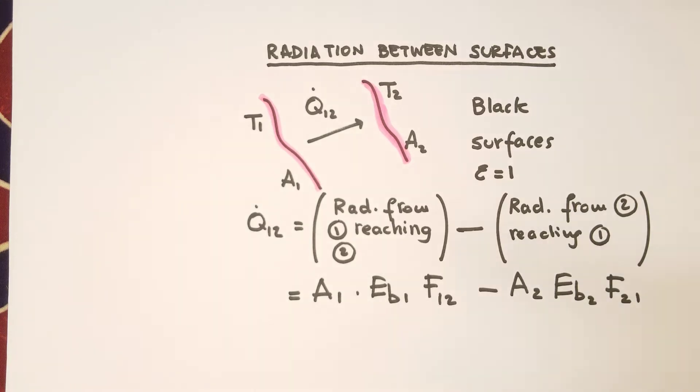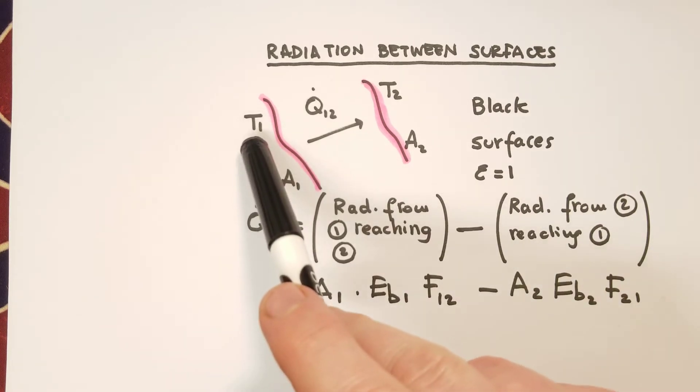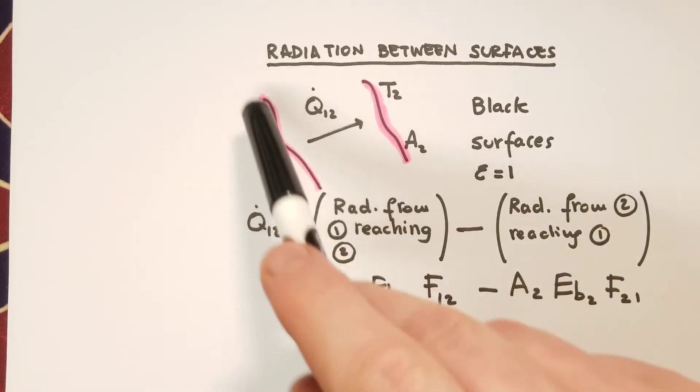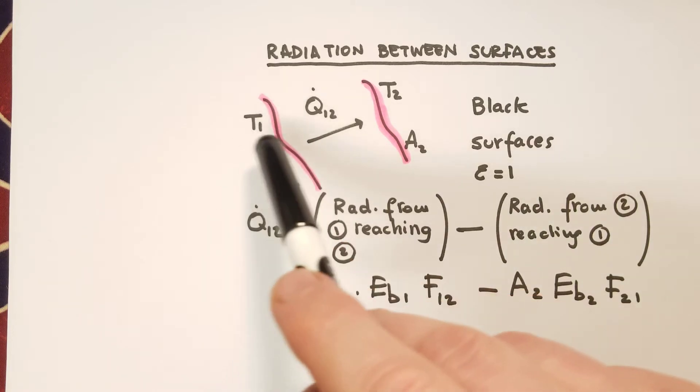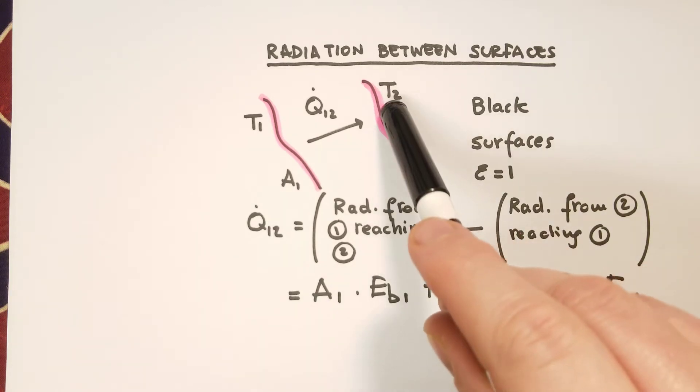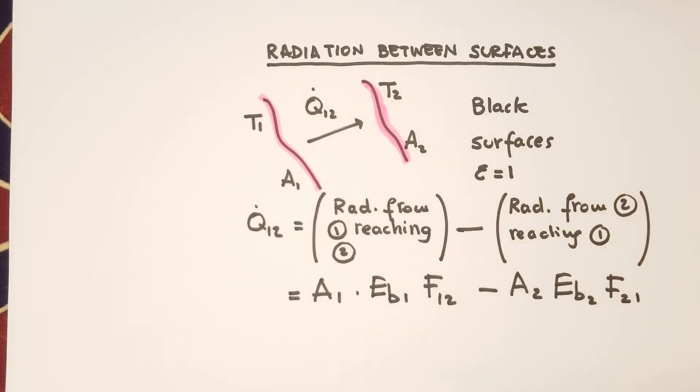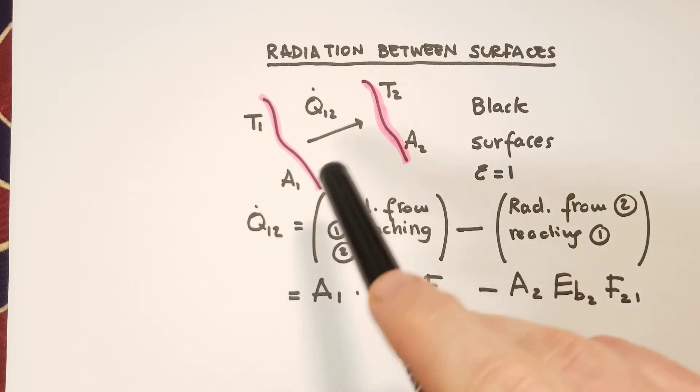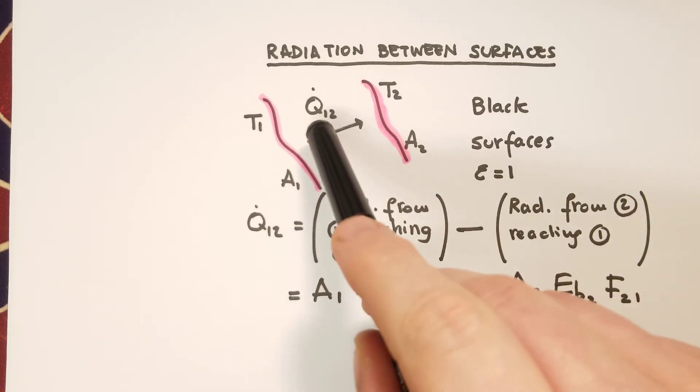Let's consider two black surfaces, surface 1 and surface 2. Surface 1 is at a temperature T1, isothermal surface, constant temperature and uniform, and the same for surface 2, isothermal surface with temperature T2. So if T1 is different from T2, then we will have an exchange of radiation, heat transfer by radiation, Q12.